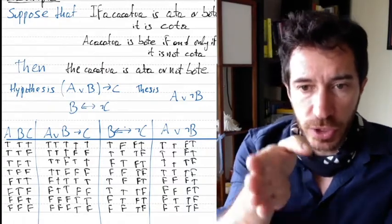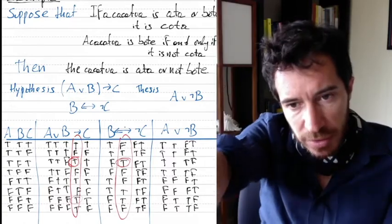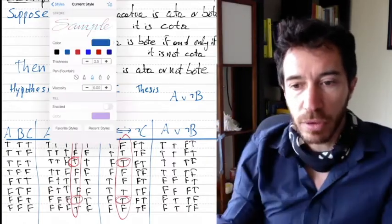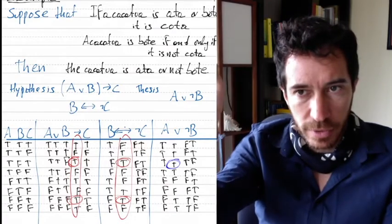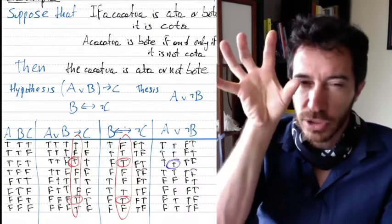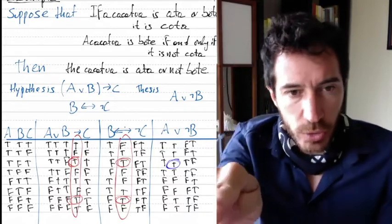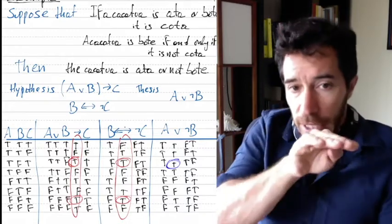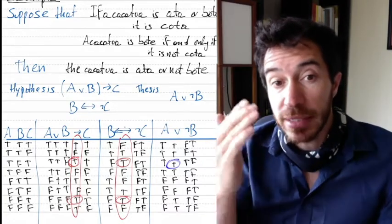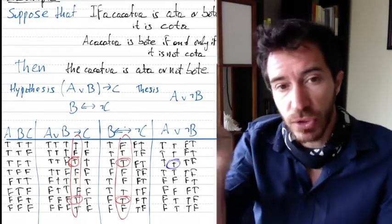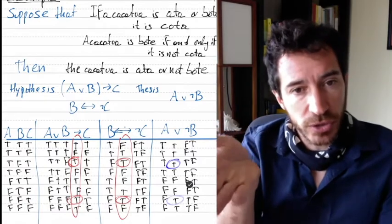We end up with this truth table. Remember, to tell whether each formula is true, you look at the main connective of that formula — in the first case it's the implication, in the other case it's the if-and-only-if. We mark the rows where both of the first formulas are true, because our assumption is that the cacatua satisfies both hypotheses simultaneously. Those are two rows marked with circles — the only rows where both are simultaneously true. In those rows, the conclusion is also true.